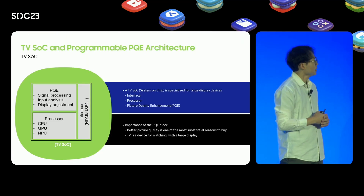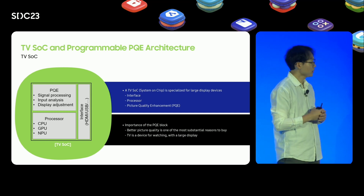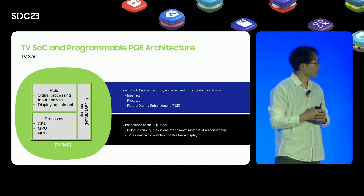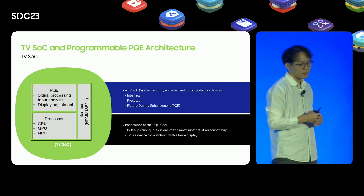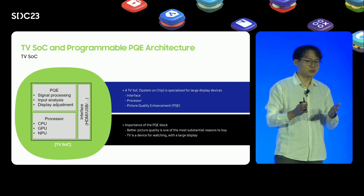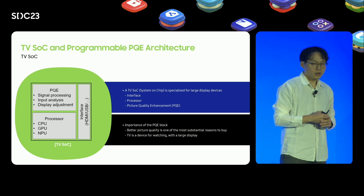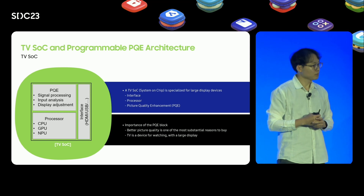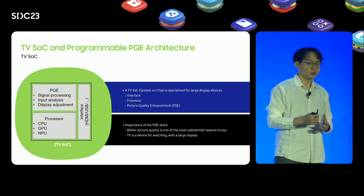TBSOC is specially designed according to the characteristics of large display devices. The SOC contains an interface unit that performs connections to external devices, a processor unit which handles various operations, and a PQE unit that performs picture quality related tasks. The major difference between TBSOC and other SOCs is the importance of the PQE block. After all, better picture quality is one of the most important reasons to buy a TV, because TV is a device for watching and it is a large display device — so it makes sense.